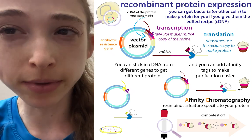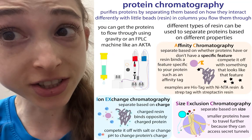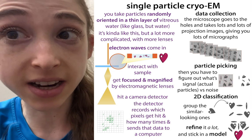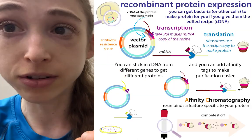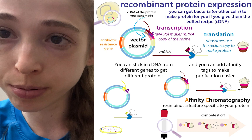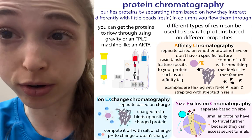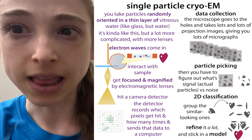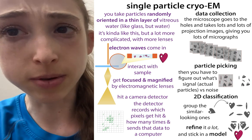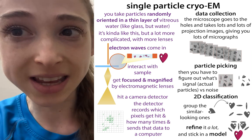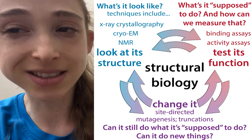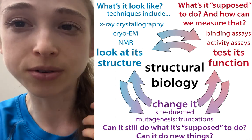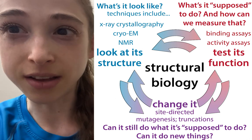Here is a whirlwind overview of recombinant protein expression and purification techniques, as well as structural biology techniques. What do scientists do if they want to study what a protein looks like and how it works? How do they get cells to express that protein, purify it using protein chromatography methods, and use structural biology methods like x-ray crystallography and cryo-EM to figure out its structure? And how can biochemical assays connect form to function — the heart of structural biology.